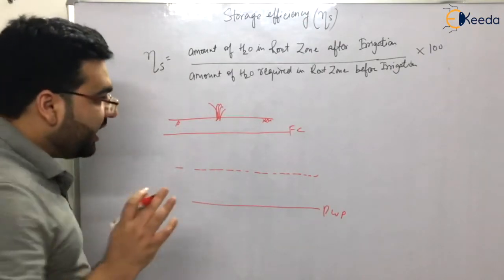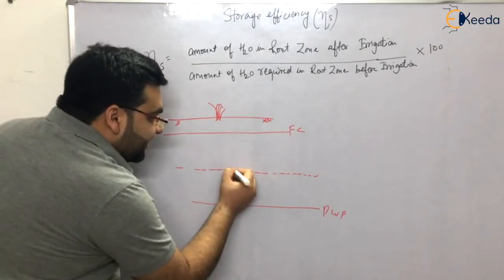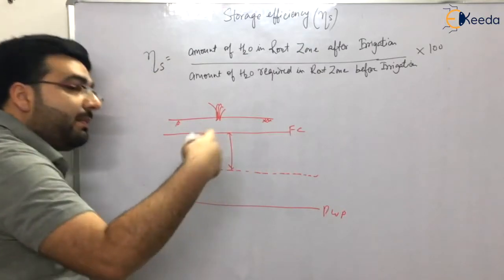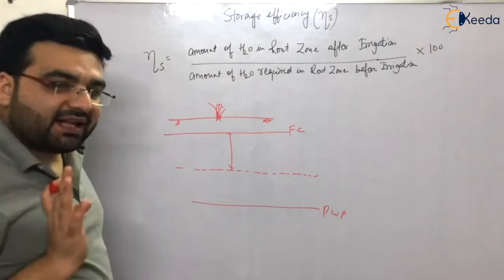Now you can see that if this is the moisture content, this much of water can still be added to soil to meet its demand of field capacity. So this is the maximum water which can be added to this soil sample or this particular soil.